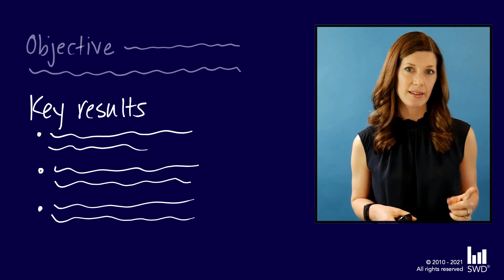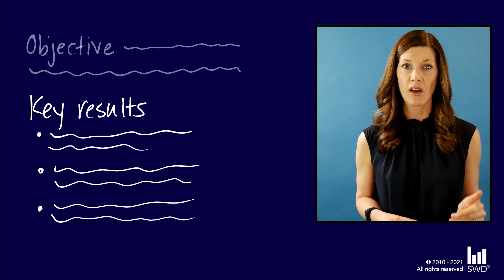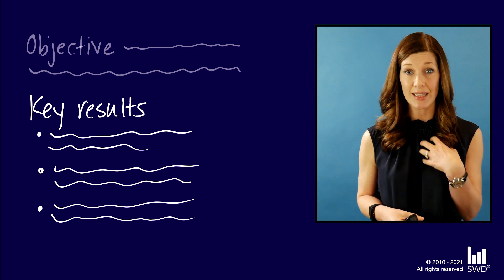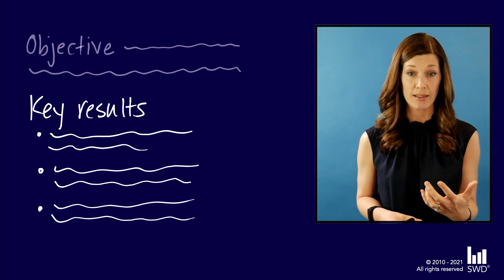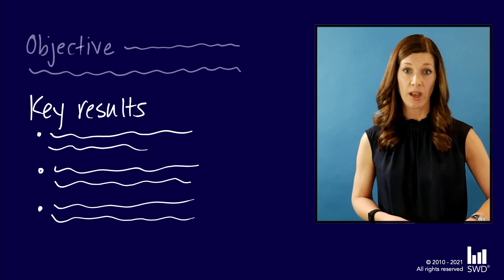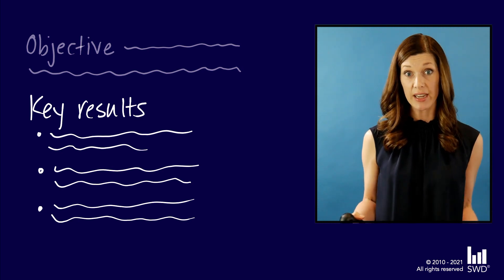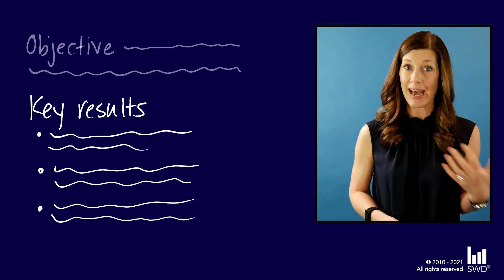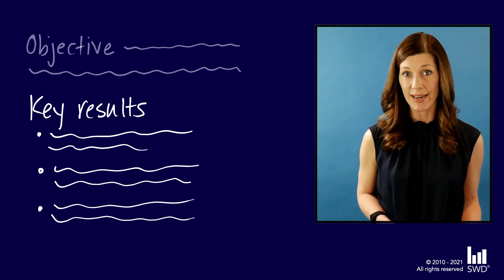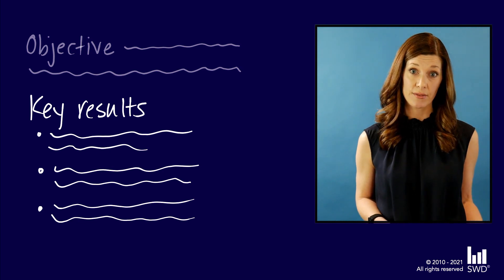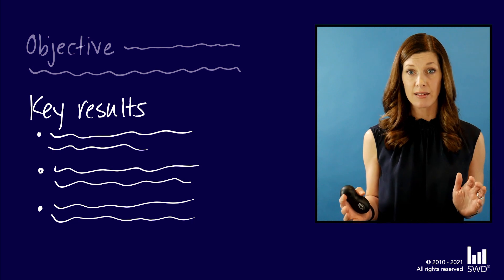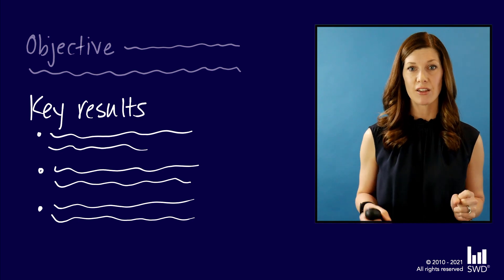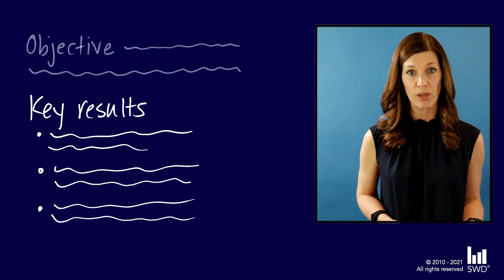One important part — maybe the most important part — of the OKR process is not just setting goals quarterly, but also assessing your progress against them. At the beginning of the quarter we set our OKRs, talk through them, give feedback, and refine — it's usually a couple-week process. At the end of the quarter we go back and assess how we did. We actually grade our OKRs on a simple scale of zero to ten: zero means no attention at all, ten means you did everything you set out to do.